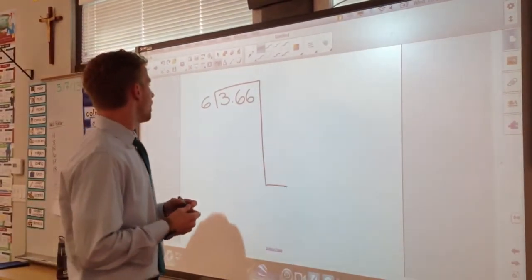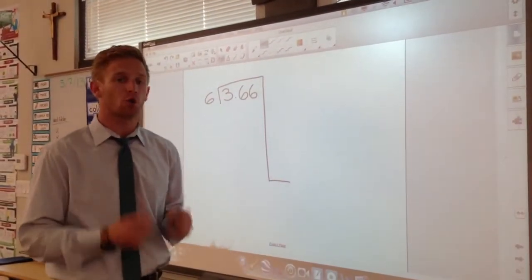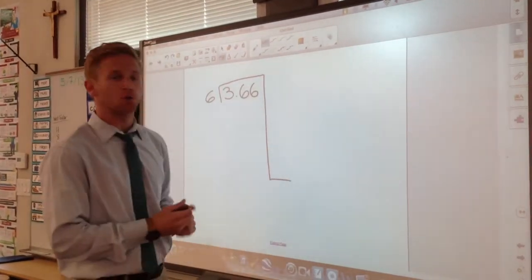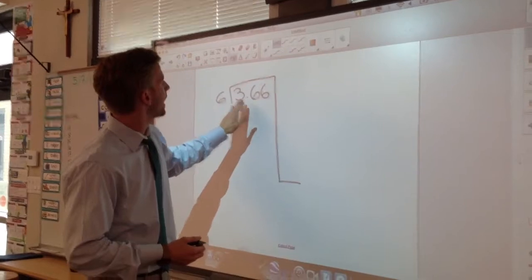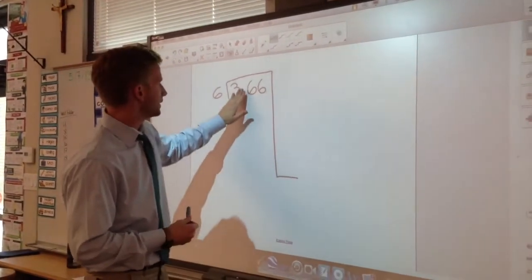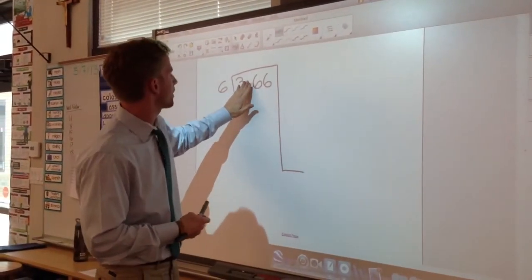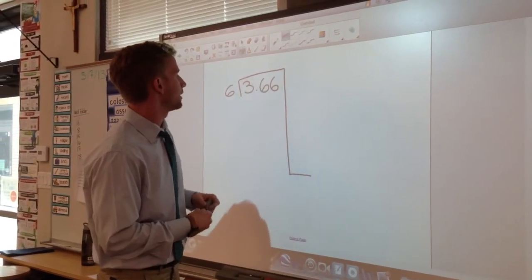Now, we're going to divide our two factors using the partial quotients method. The partial quotients method asks us to treat our dividend of 3.66 and treat it just like it's 366. Go ahead and cover up that decimal, act like it's 366.